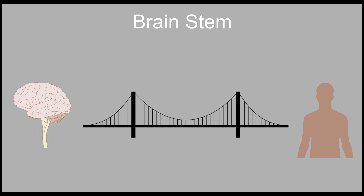The brainstem is the part of our brain responsible for survival. Because of the brainstem, we are able to breathe, blink, and keep our hearts beating automatically. The brainstem is also the bridge between our body and our brains. Sensation arouses the brainstem and reacts accordingly to keep us alive.